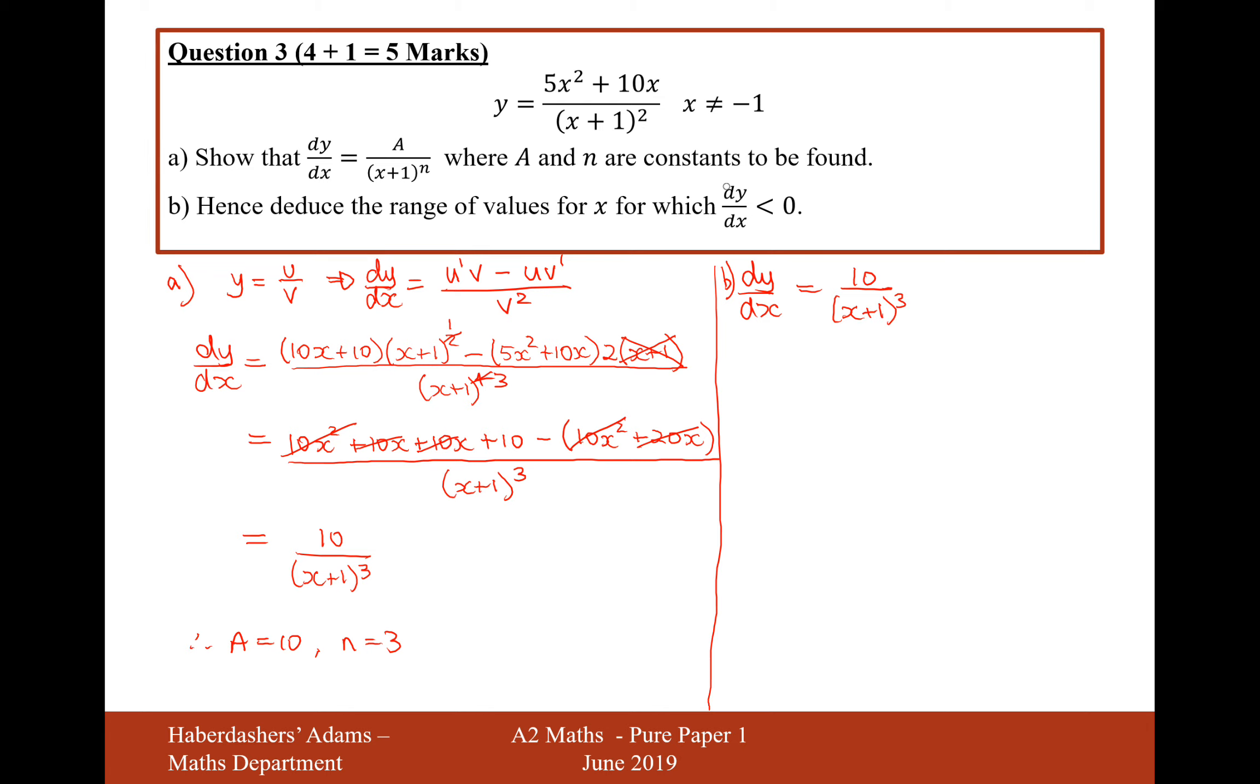So we're looking for when the derivative will be less than 0. So we're looking for when this expression will be less than 0. I would say when x is less than minus 1, the denominator will be then a value less than 0. So then the whole thing will be 10 divided by something less than 0, which will be a negative number. So then dy by dx will be less than 0. So it's when x is less than minus 1 is the answer to that one.